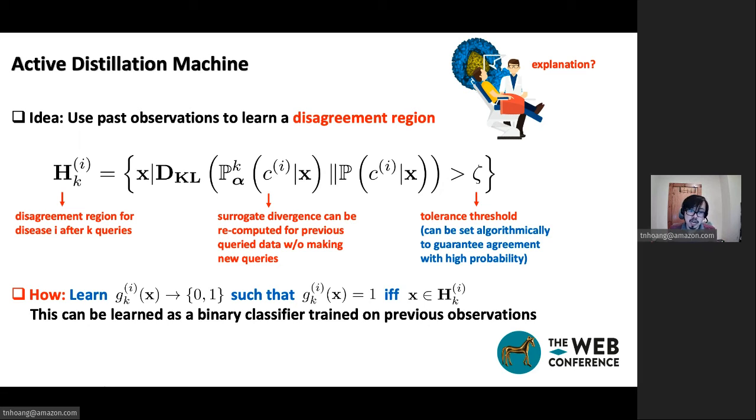And in a nutshell, from the past observation, we already know the probability returned for this past observation by the cloud model. And we can use our current estimation of the surrogate model to compute the outcome probability again. And then we can compute the divergence. And because of that, we can determine whether the input of the observation will fall into the disagreement region or not. So this will be the training data set for us to learn the binary classifier. Once learned, this binary classifier can be used on unseen input to determine whether the input will fall into the disagreement region or not. If it does, then we can just sample from the disagreement region to send in a query.